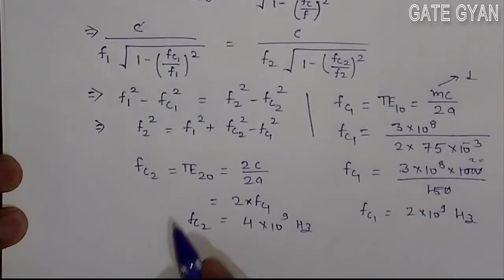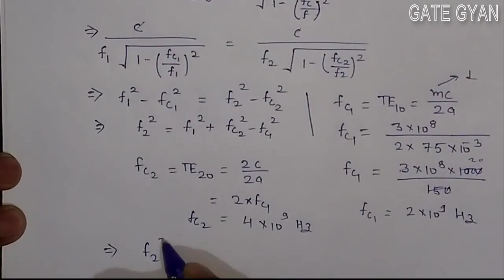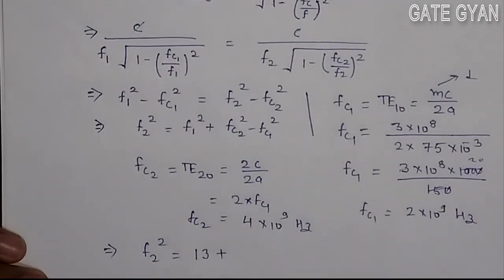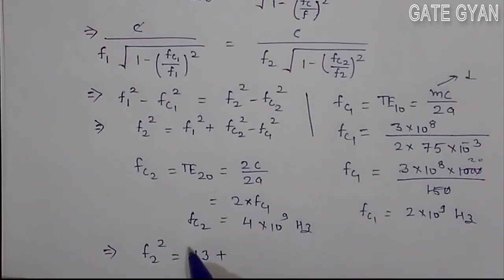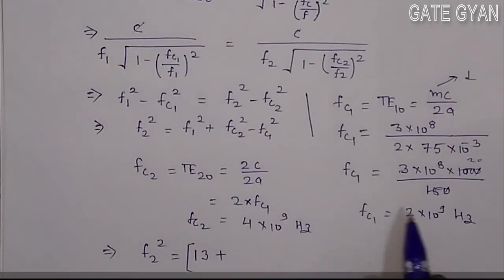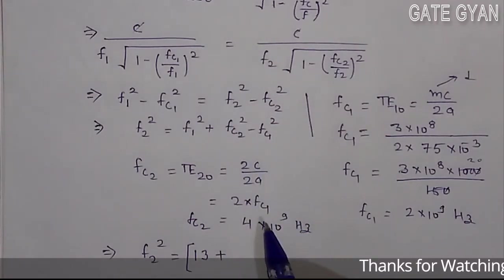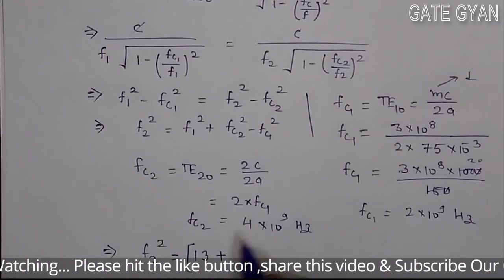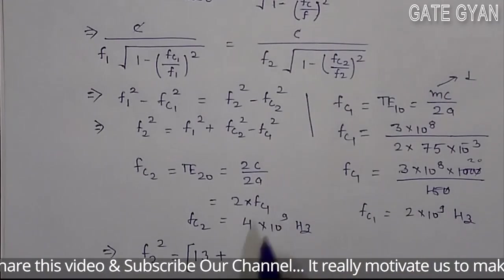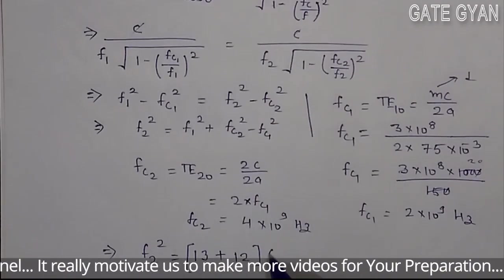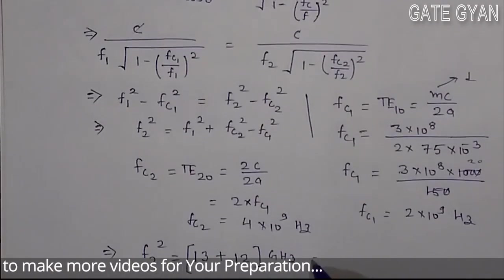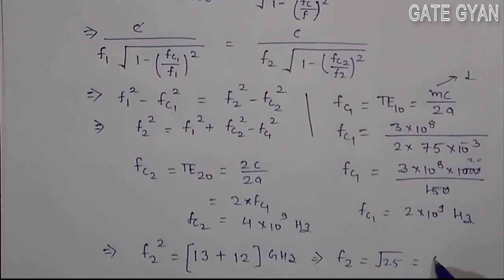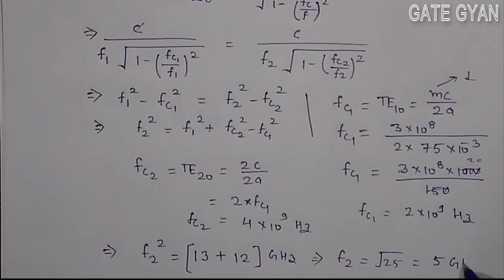Put these values in the equation which we have calculated. F2 square equals F1 square, and F1 is square root of 13, so F1 square is 13 plus F2 square minus F1 square. Basically F2 square minus this, so it is 16 minus 4. If you solve it, it is 12 gigahertz. F2 is square root of 25, so the final answer F2 is 5 gigahertz.